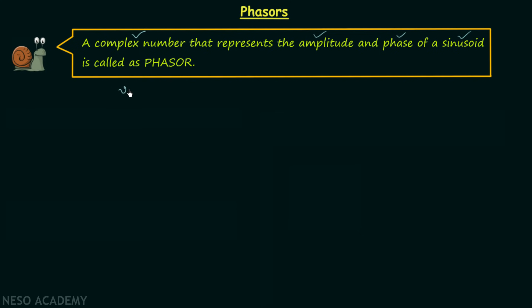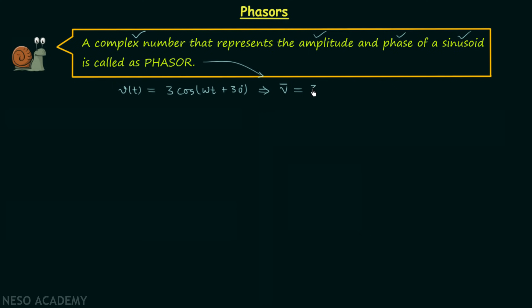For example, if we have a sinusoid V(t) equal to 3 cos(ωt + 30°), here the amplitude is 3 and the phase is 30 degrees. Corresponding to this sinusoid we will have a complex number known as the phasor, which will have two pieces of information about V(t): the amplitude 3 and the phase angle 30 degrees.